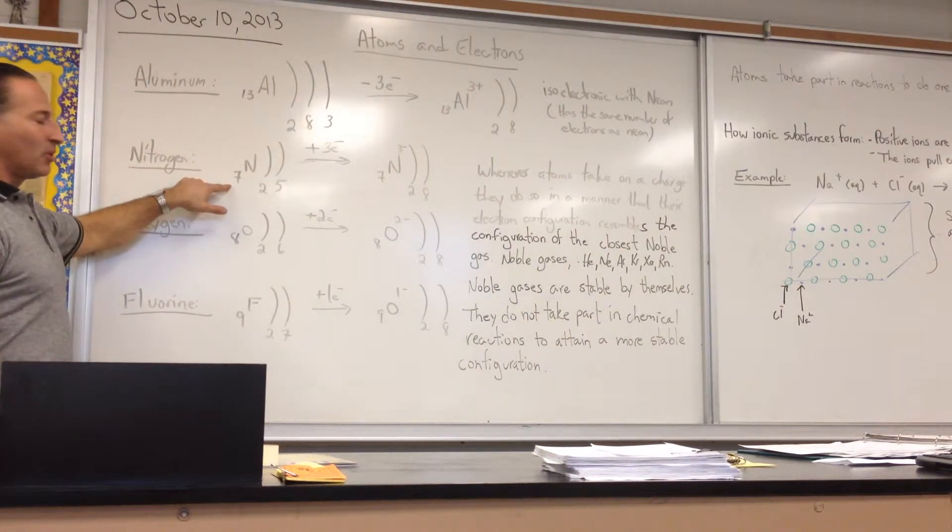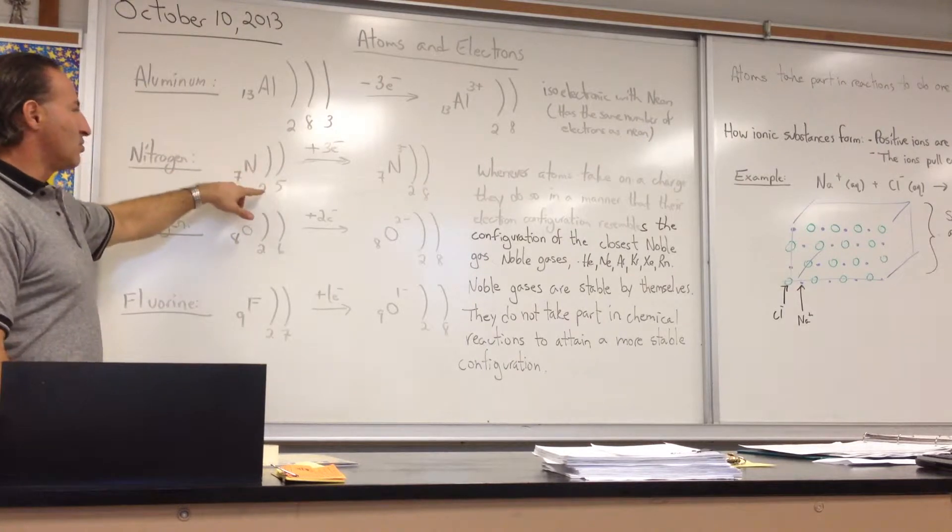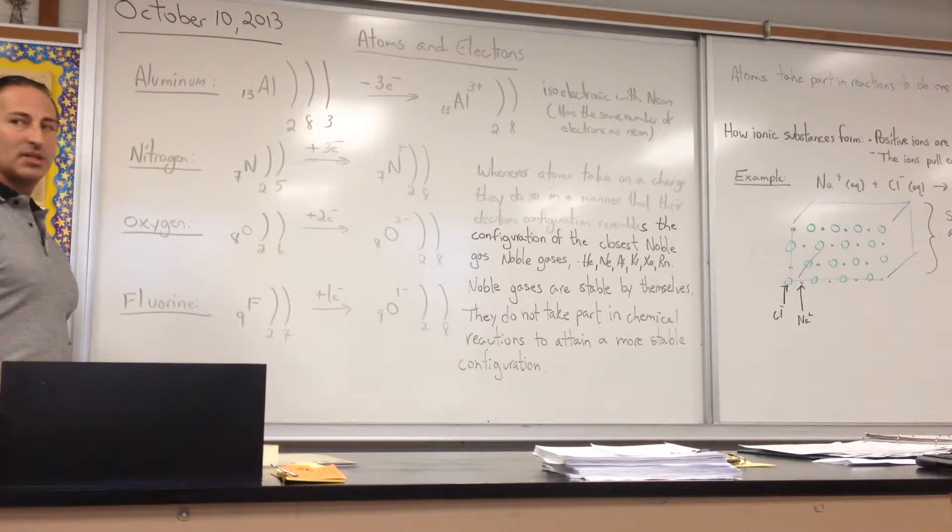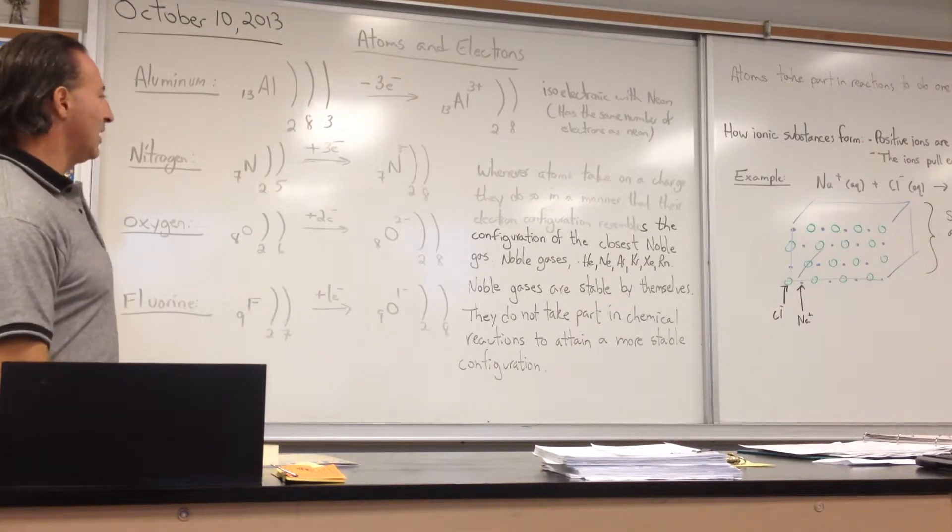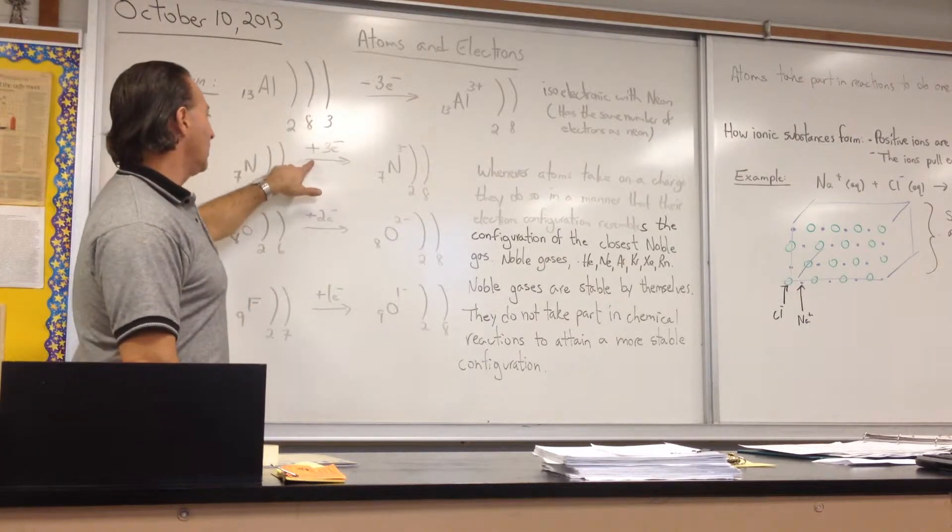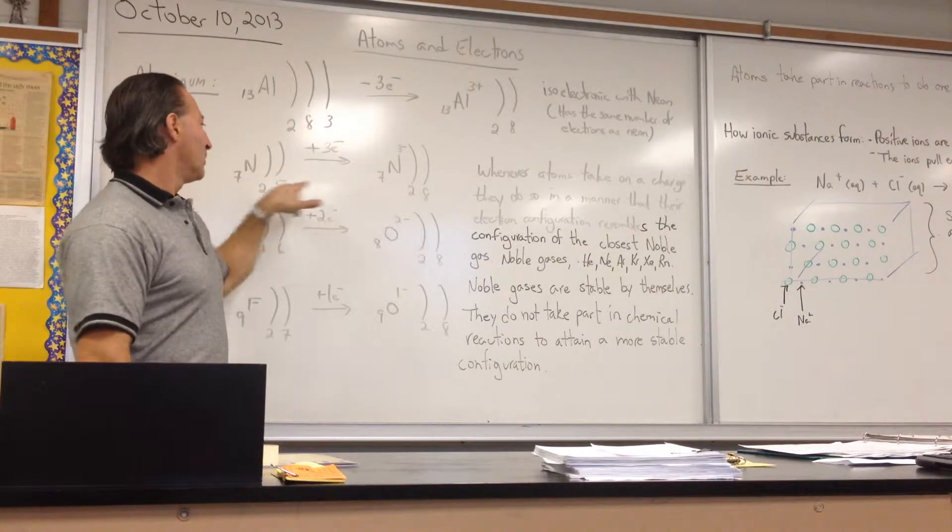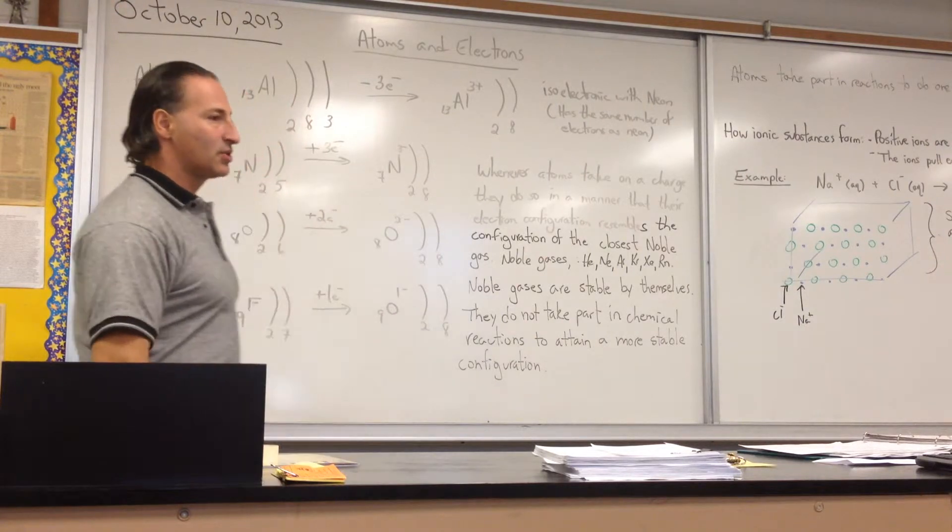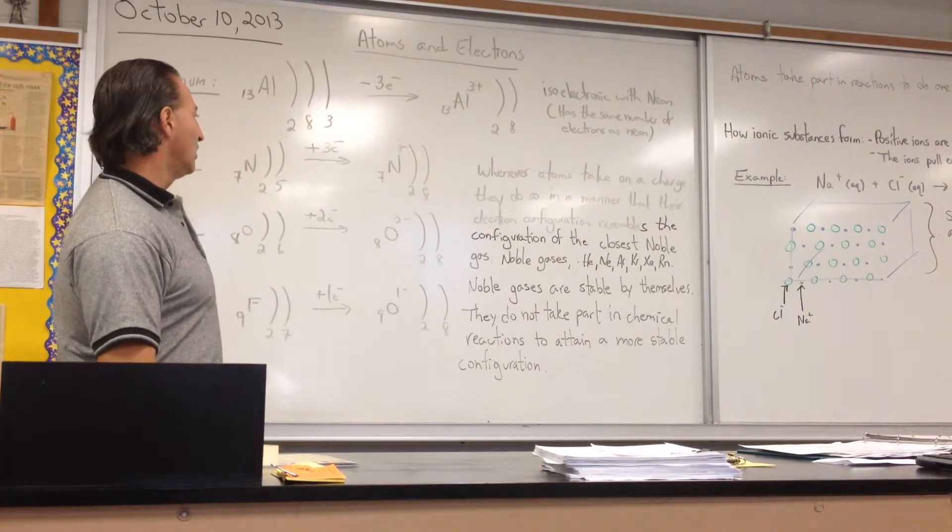Nitrogen has seven protons, and therefore, when it's neutral, it also has seven electrons, two and five. And when it becomes charged, it becomes the nitride anion, it will gain three electrons, which will then fill up the shell. It will add three more electrons to this shell, so you get eight electrons in the outer shell of nitrogen.